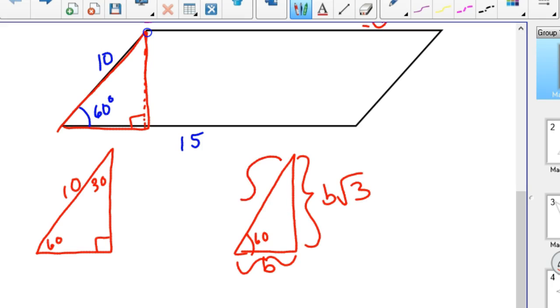We're given the hypotenuse this time, so to get our short leg we'd have to divide that by 2, so this is 5. And then our longer leg is 5 square root of 3 based on this same triangle. So we know the height of this thing is 5 square root of 3.